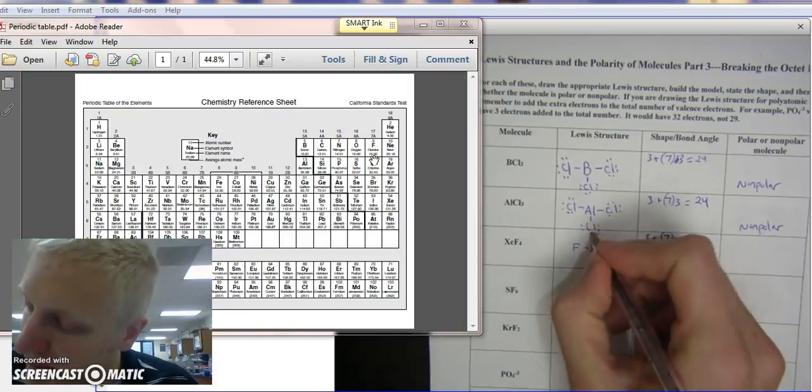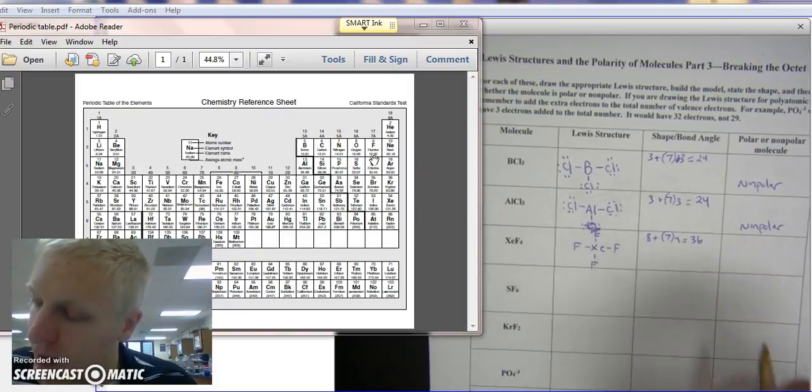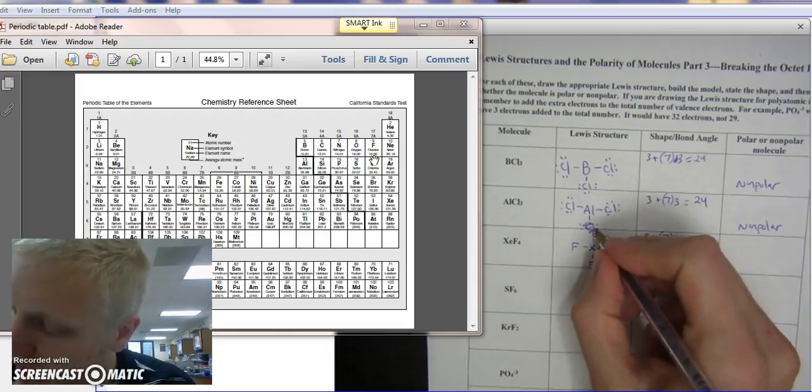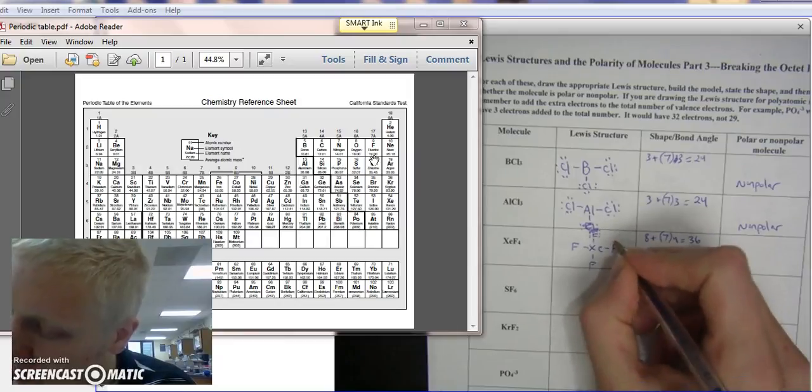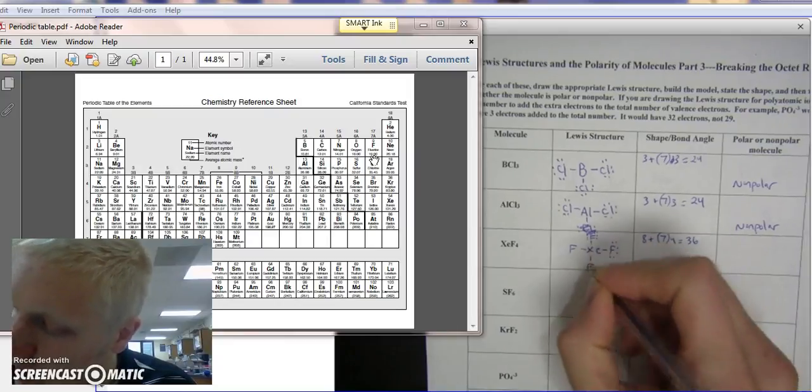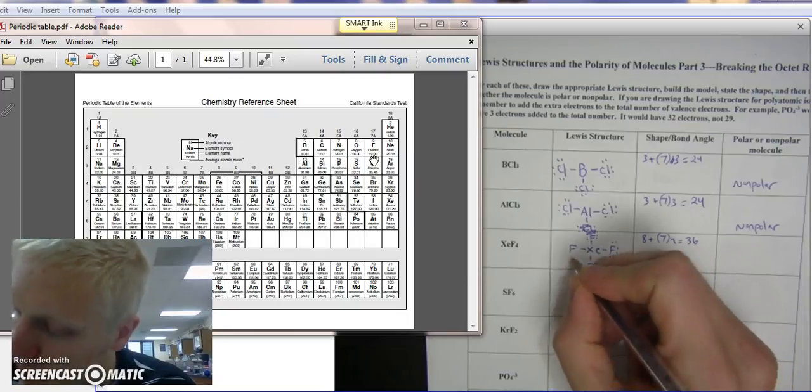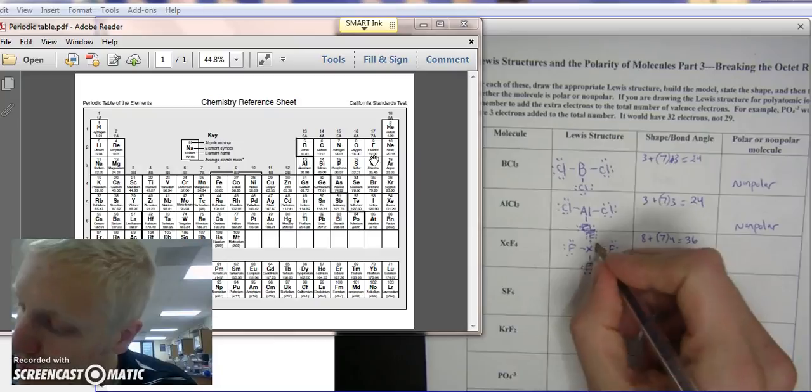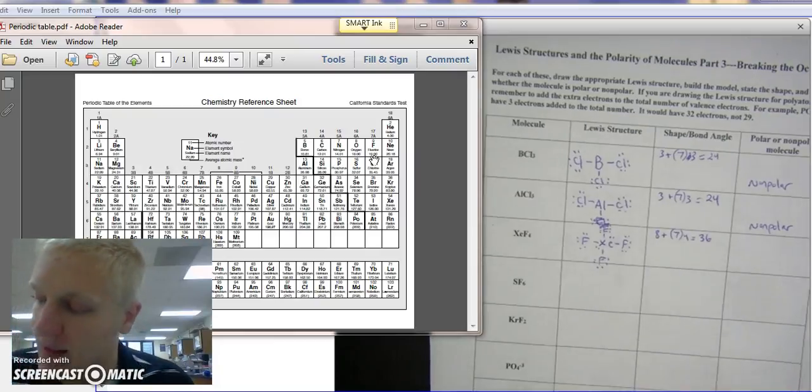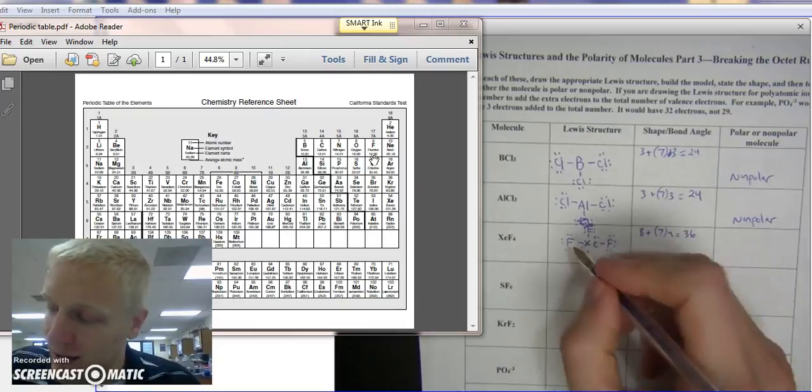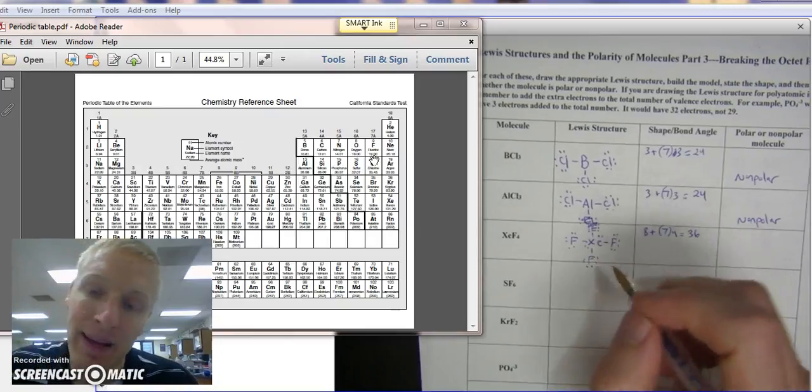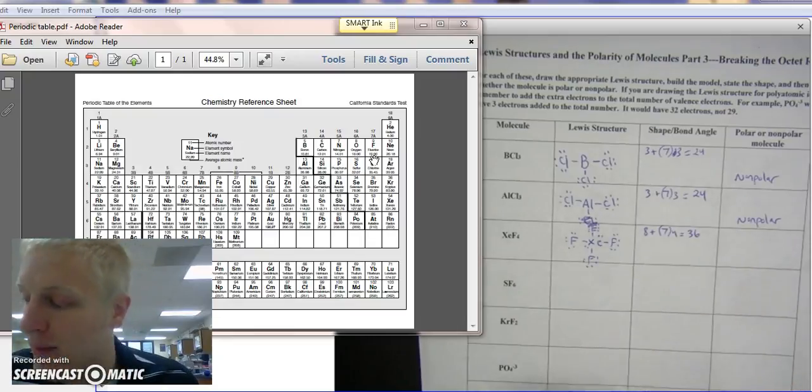And I'm then going to add dots to the outer atoms and then to the center. [counting from 2 to 36]. So if I still have electrons available, and I filled up all my outer atoms, then I have to expand the octet on the center atom and have more than 8. And that is okay.